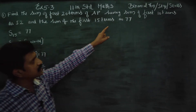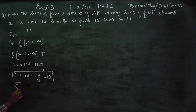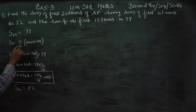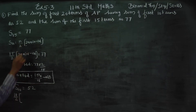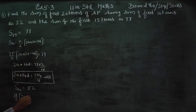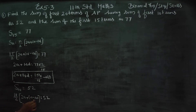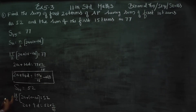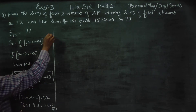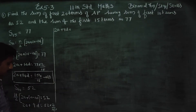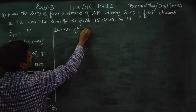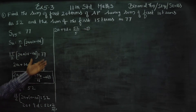Next, for the sum of first 10 terms, S10 is equal to 52. Applying the formula: 2A plus 10 minus 1 into D equals 52 cross multiplied. So 2A plus 9D is equal to 52 by 5. This will be equation number 2. I am going to solve equation 1 with equation 2.